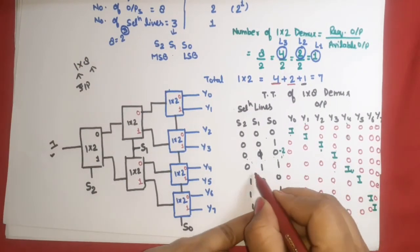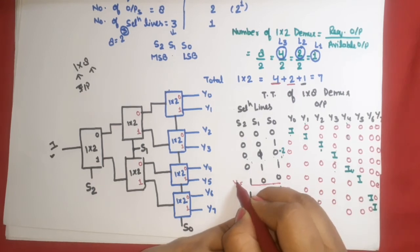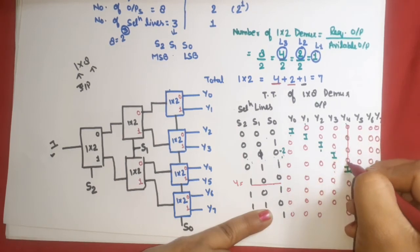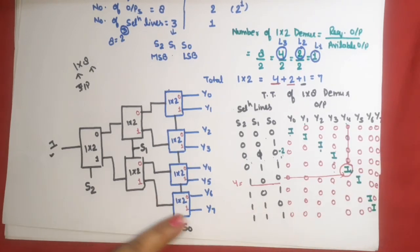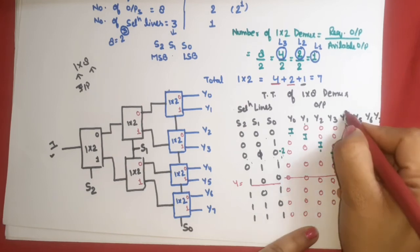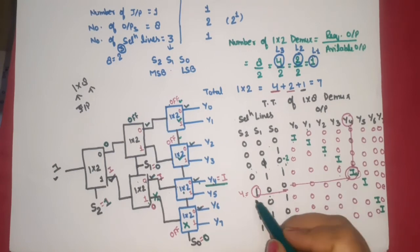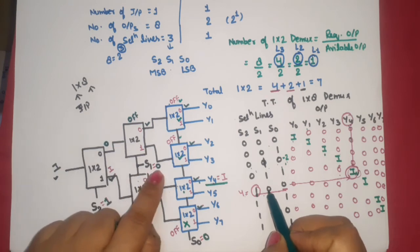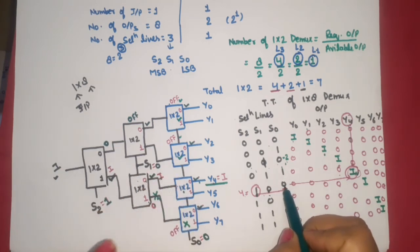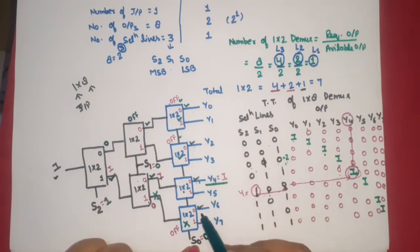For example, let's check the combination 1, 0, 0 — which is equivalent to 4. So y4 should be selected, and the input i should be available at y4. Let's verify: S2 is 1, S1 is 0, S0 is 0. Since S0 is 0, the 0-output path is selected at level 3, meaning y0, y2, y4, y6 side is active.